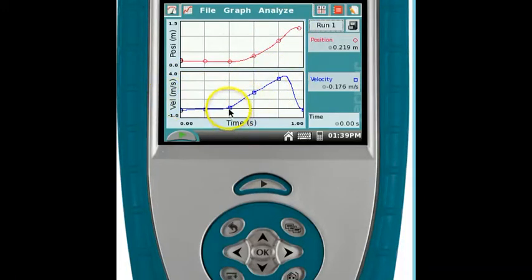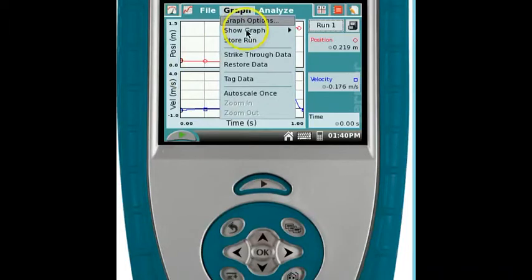The second graph here, velocity against time, we can see that the velocity is about a straight line during the fall, which shows that the acceleration is pretty constant because the slope of the velocity time graph is the acceleration. So I'm going to just show one graph. I don't really want to see two graphs at once.